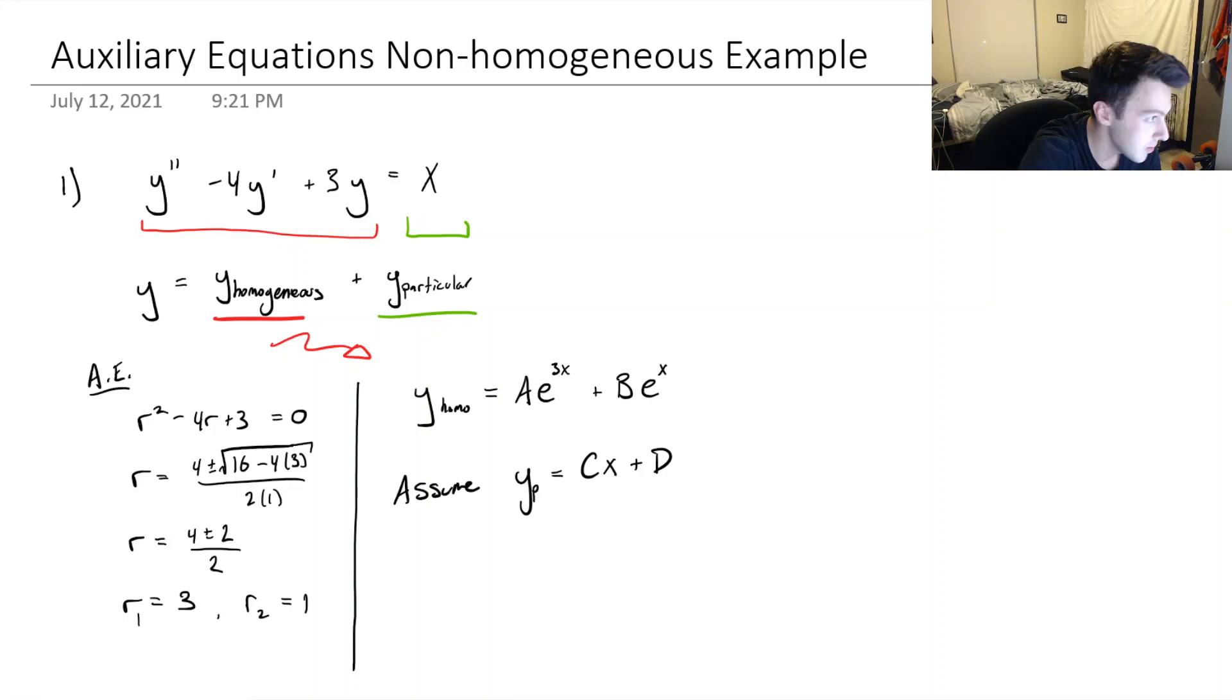So let's take the derivative of this, we'll get C. Let's take the second derivative of this, we'll get 0. Okay, I think I can move over here.